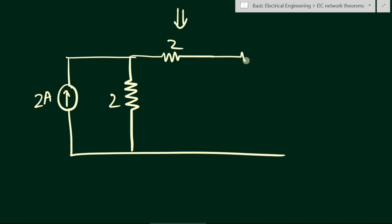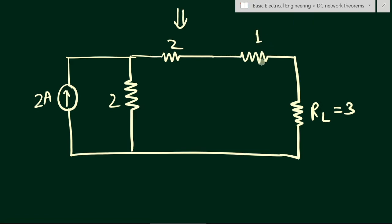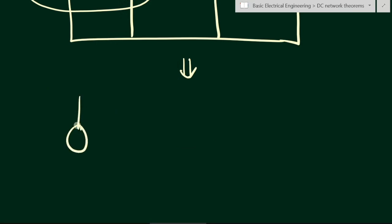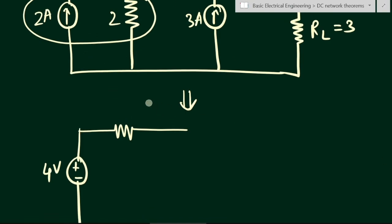We also have a 1-ohm resistance and the load resistance RL. We also have a 3-ampere current source with parallel resistance. Now we convert this current source with parallel resistance into a voltage source with series resistance. V = IR = 2 amperes × 2 ohms = 4 volts. The current is in the upward direction, so the voltage source has plus on top. The series resistance is 2 ohms.